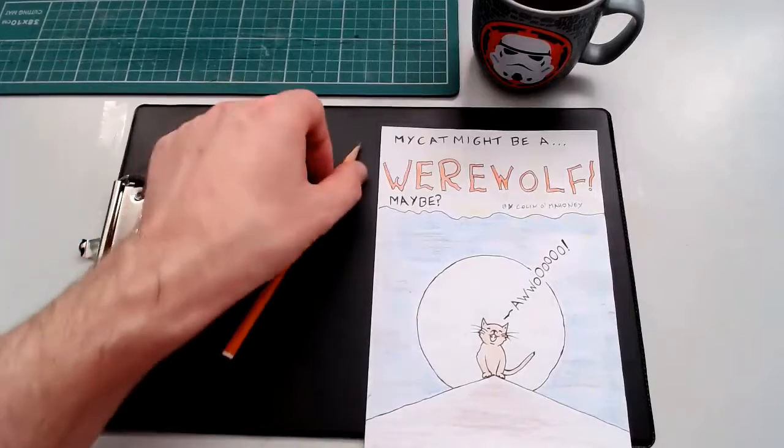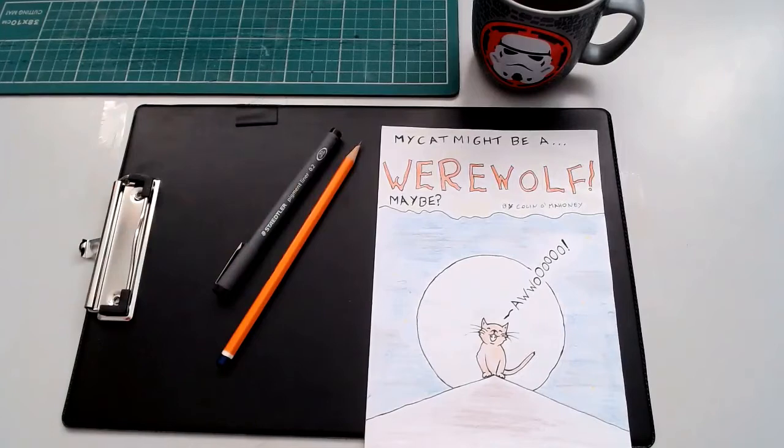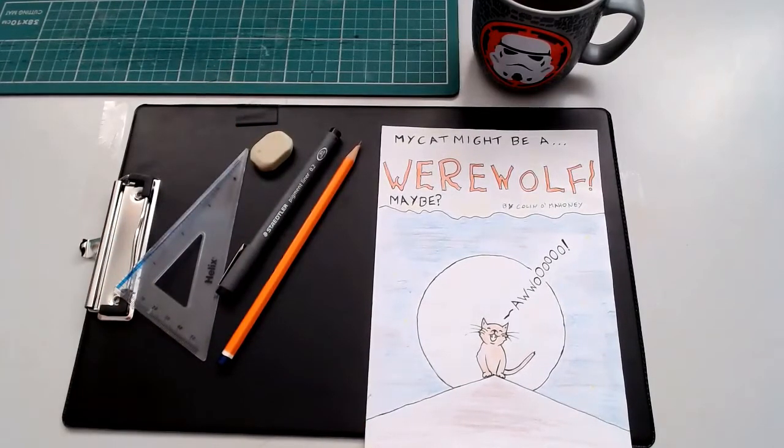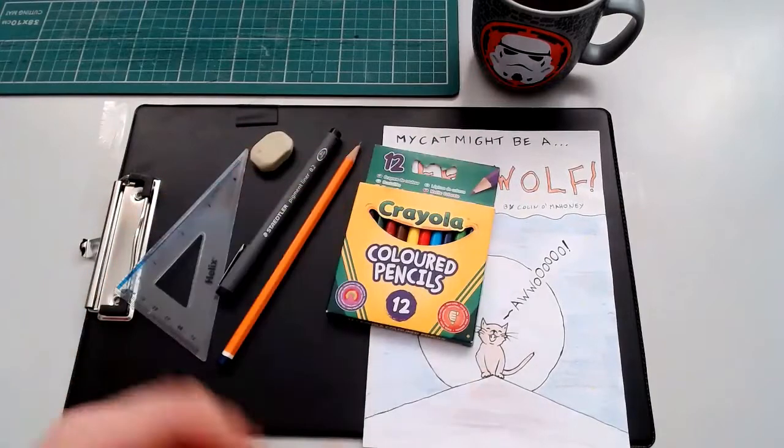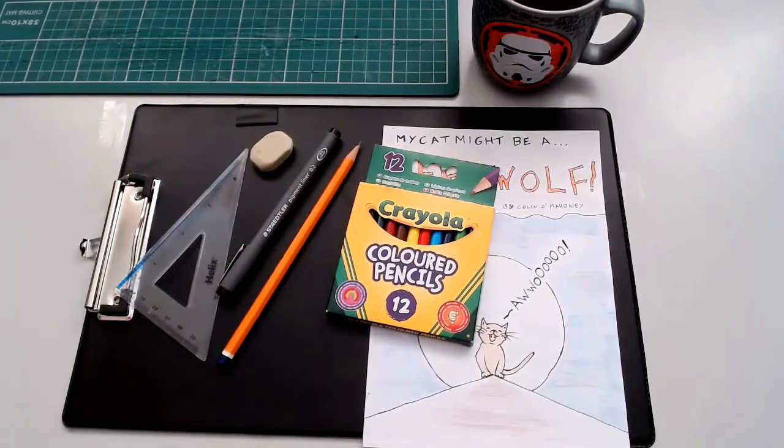You'll need pencil, some kind of pen for inking. Biro is okay. Rubber, because we all make mistakes. Ruler, and something to color it in with. I use coloring pencils which are totally fine, but you can use markers, crayons, paints, whatever you want.